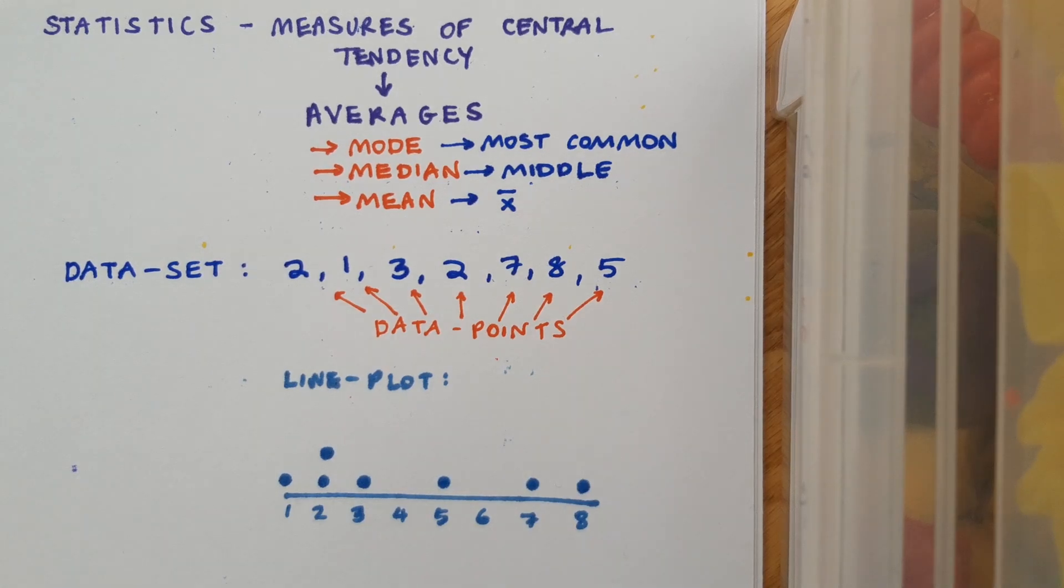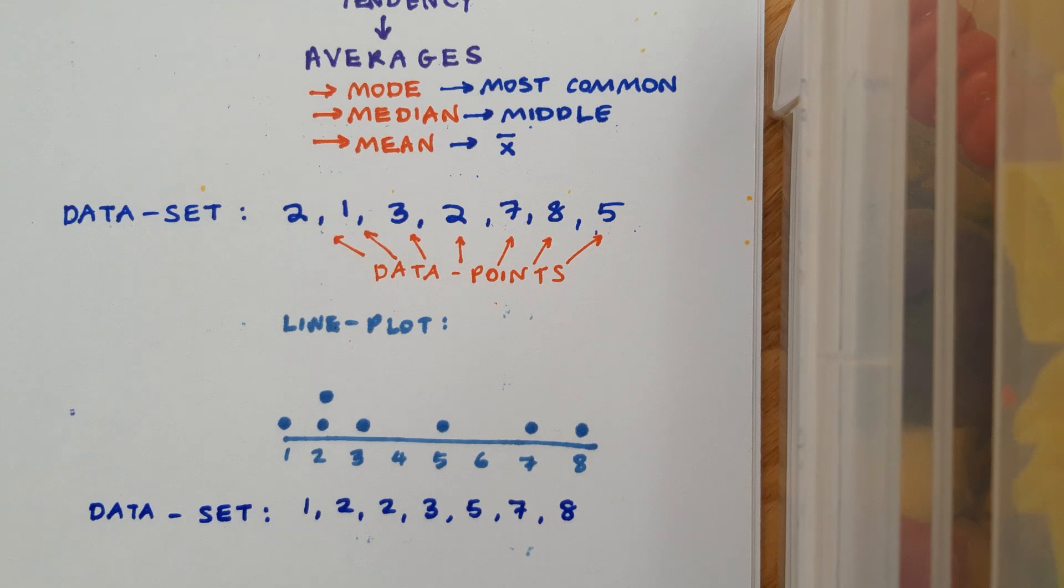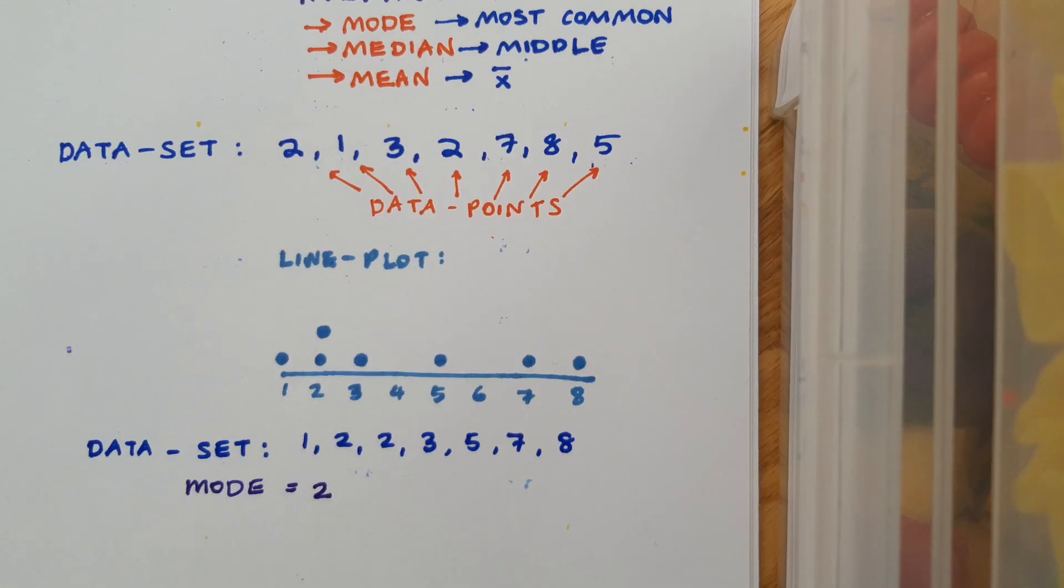If you prefer to just organize your data set in list form, that's fine too. Now that I've done that, it's easy to identify the mode. The mode is just the most common. In this case, the mode is 2. It's possible to have more than one mode if I've got a number of data points occurring the most, and it's also possible to have no mode if each data point only occurs once.